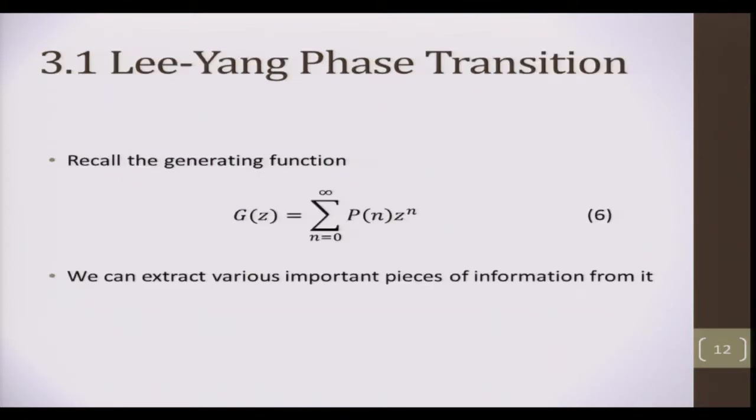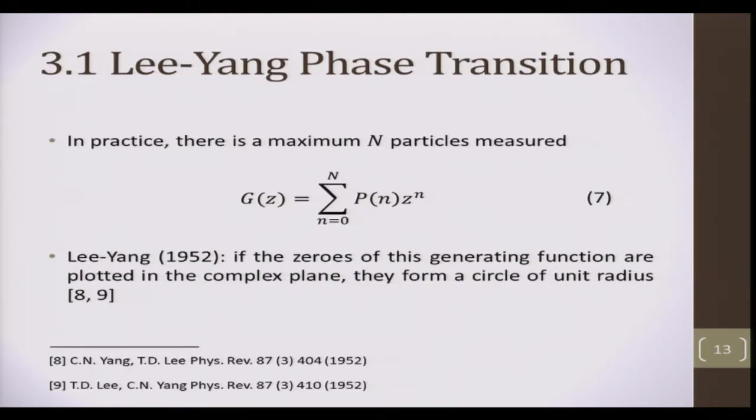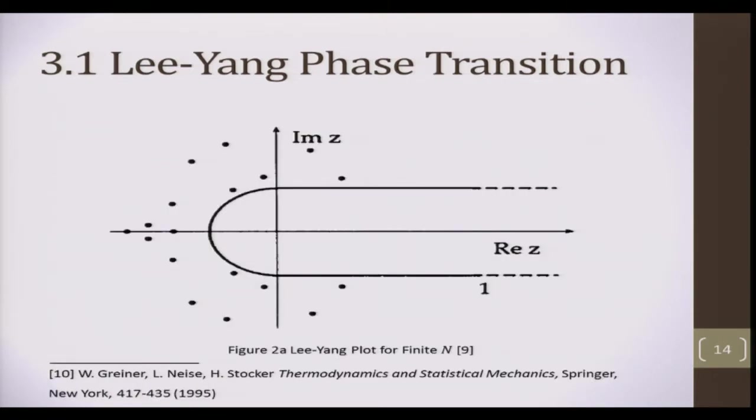In the Lee-Yang phase transition, you can write the grand canonical partition function like this, where z is a complex variable. In practice, there's a maximum number of particles n that can be measured, and so we truncate the grand canonical partition function at this n. When we find the roots in the complex plane, it should look something like this. Notice there are roots on the negative real axis, but in the positive real axis, it's devoid of roots.